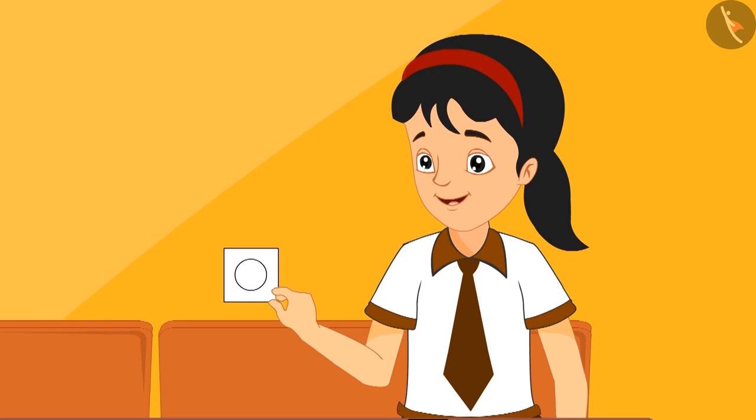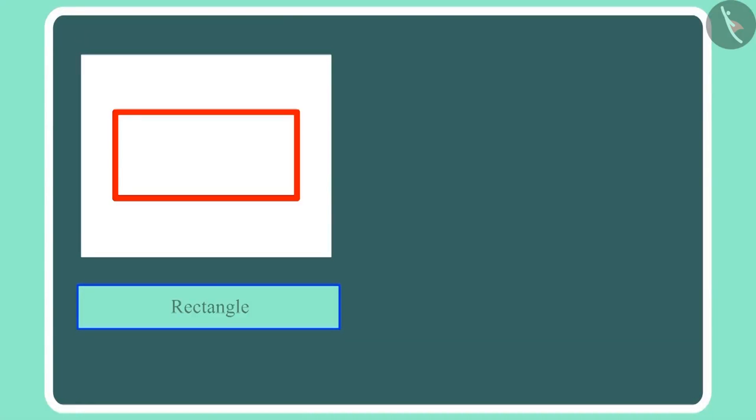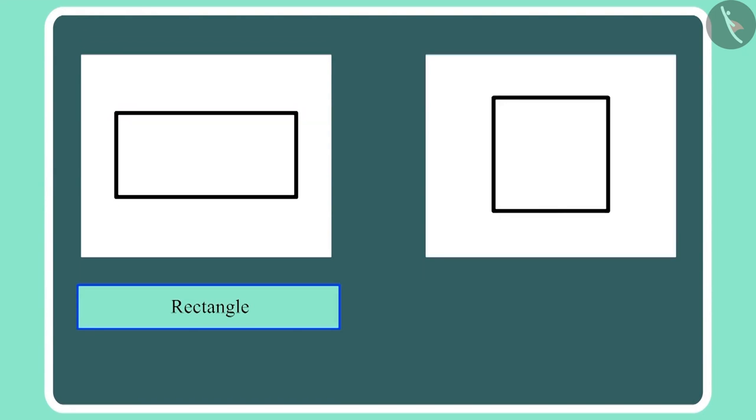Ma'am, isn't this also a circle? Yes, Pinky, this is also a circle. And this shape is the rectangle, and we call it a square.